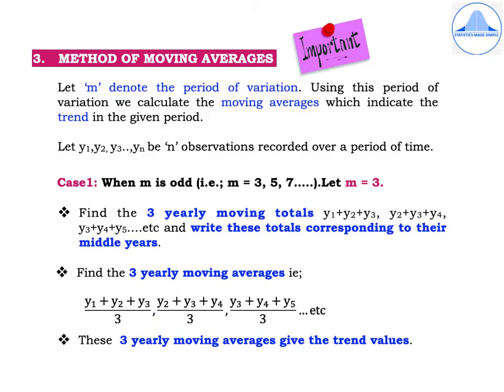Now let me explain the third method, which is the method of moving averages. Let m denote the period of variation. Using this period of variation, we calculate the moving averages which indicate the trend in the given period. Let y1, y2, y3, and so on up to yn be n observations recorded over a period of time. Case 1: when m is odd, that means m is equal to 3, 5, 7, and so on.